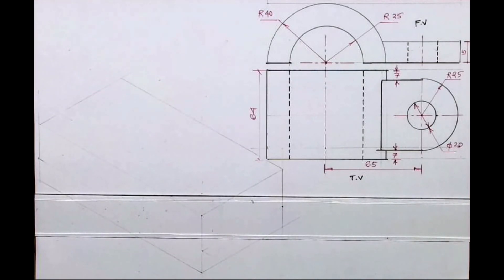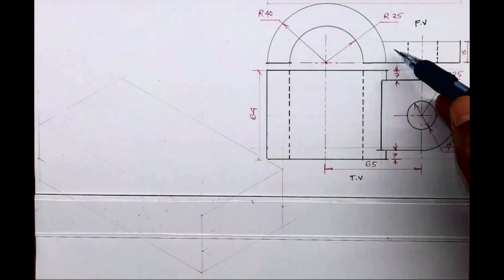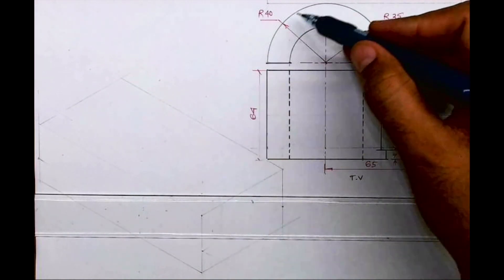Welcome to technical drawing. Today we will see this sum in isometric that I have given front view and top view. Now if you see in front view there are two parts, circle and rectangle. In top view also same two parts.